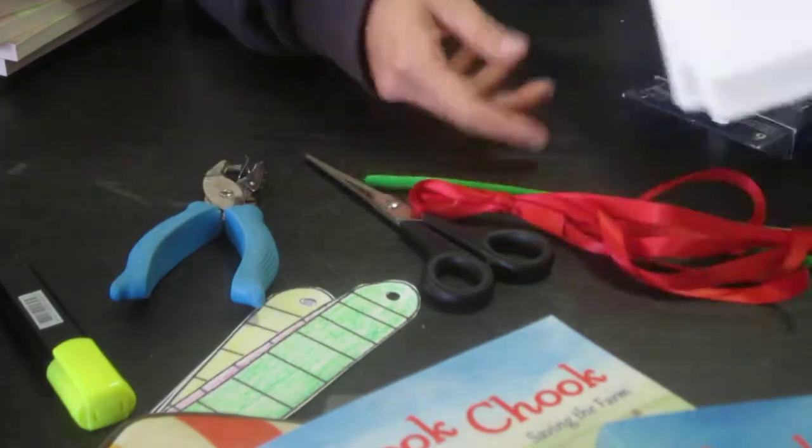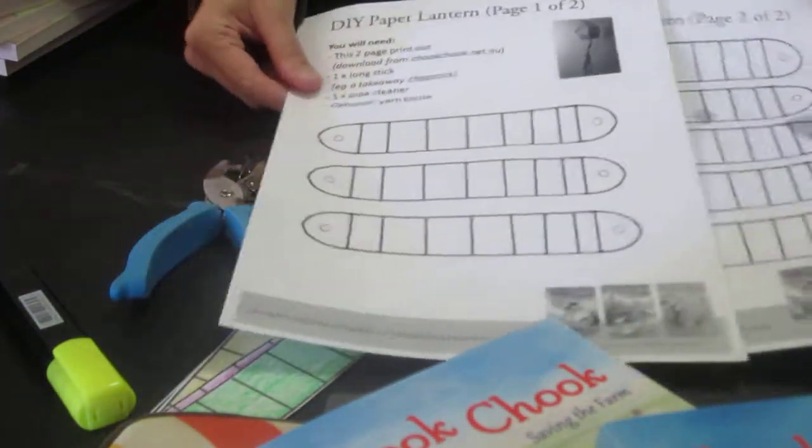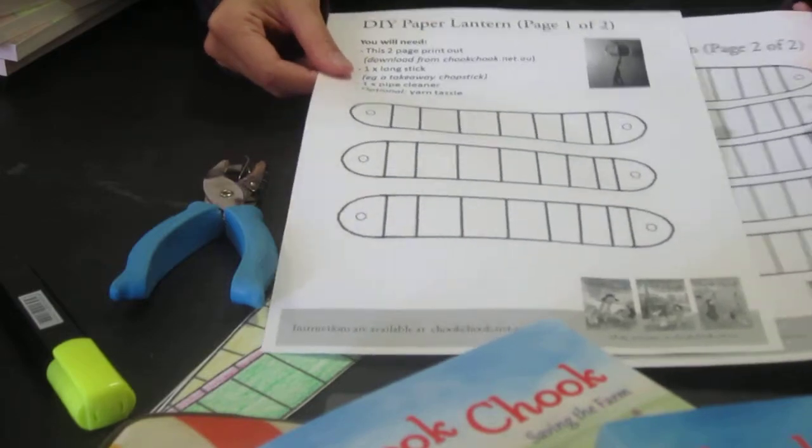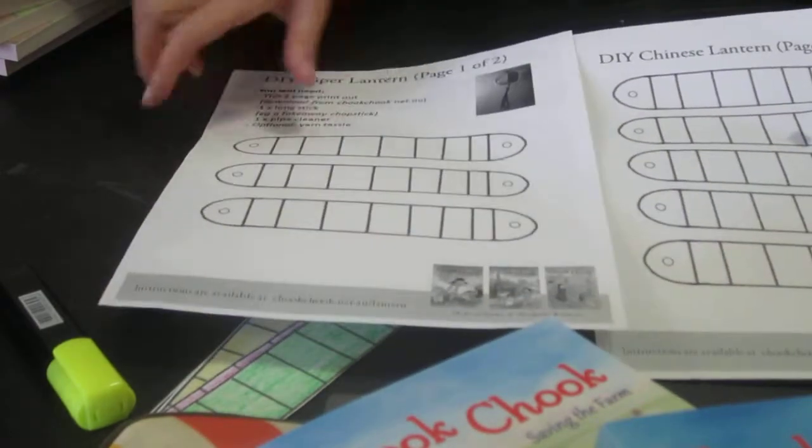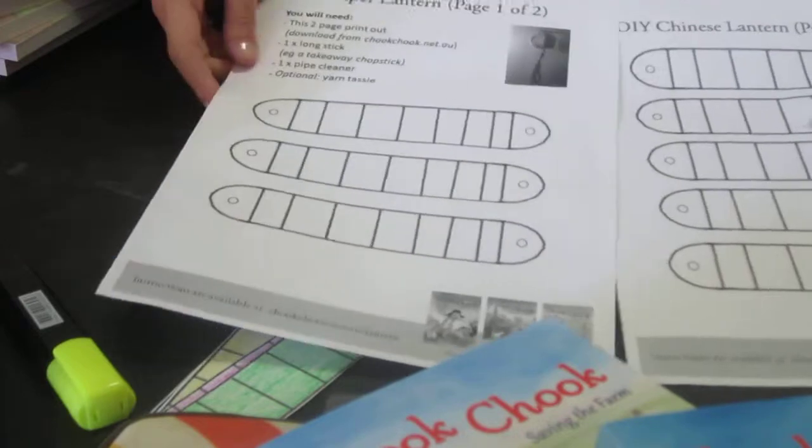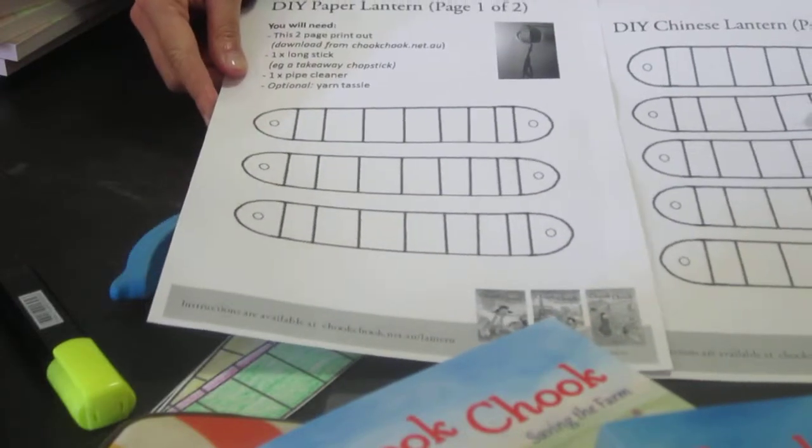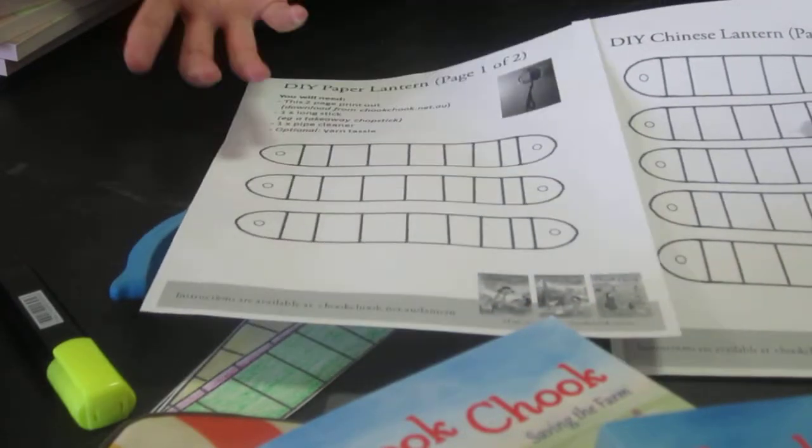So the first step is you're going to take your coloring sheets that you can download from Weichim.com, and you're going to color in the eight separate strips that you can see. Now these eight strips are going to make up the body of your lantern.